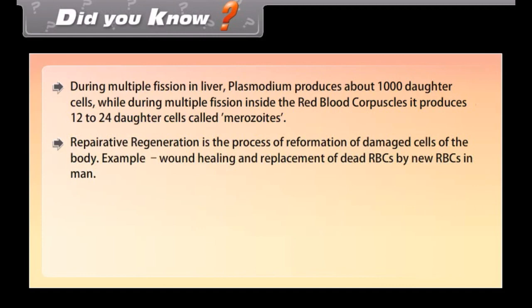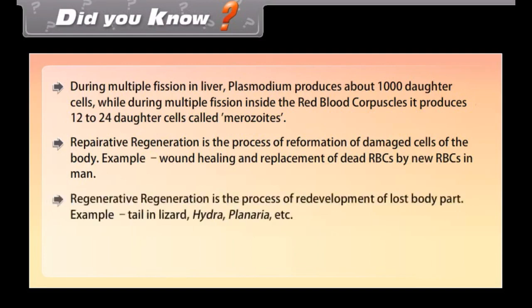Reparative regeneration is the process of reformation of damaged cells of the body. Example: wound healing and replacement of dead RBCs by new RBCs in man. Regenerative regeneration is the process of redevelopment of a lost body part. Examples include the tail in lizard, hydra, and planaria.